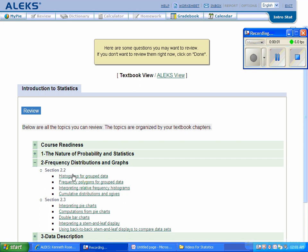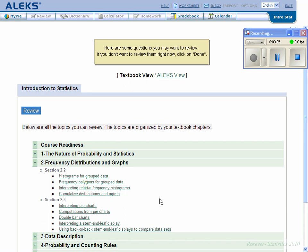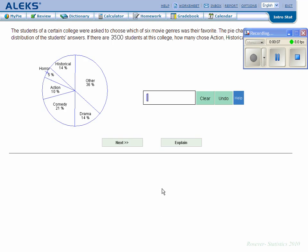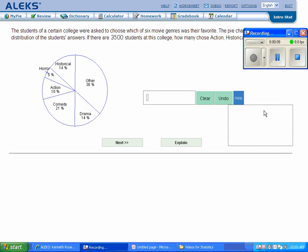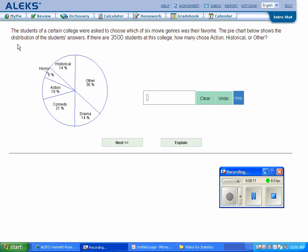Next, we have computations from pie charts. These pie chart ones aren't very difficult. The students of a certain college were asked to choose which of six movie genres was their favorite. The pie chart below shows the distribution of the students' answers. If there are 3,500 students at the college, how many chose action, historical, or other?